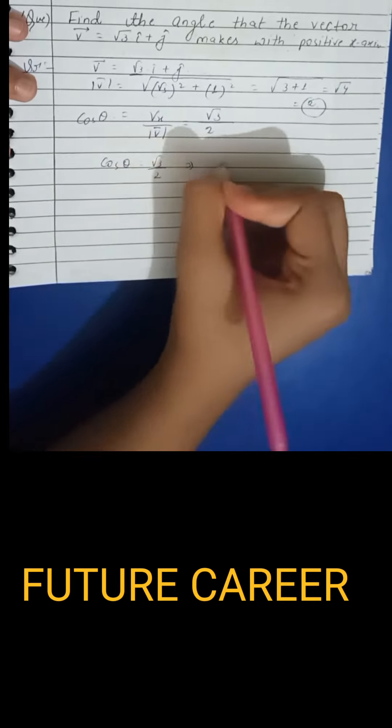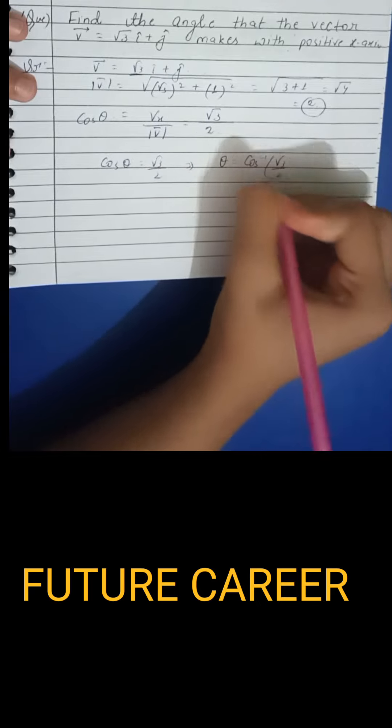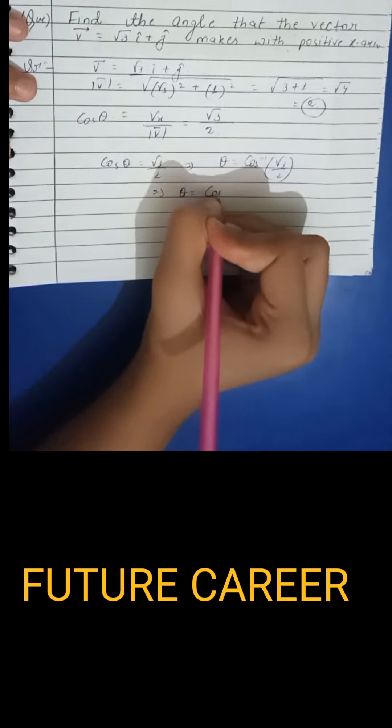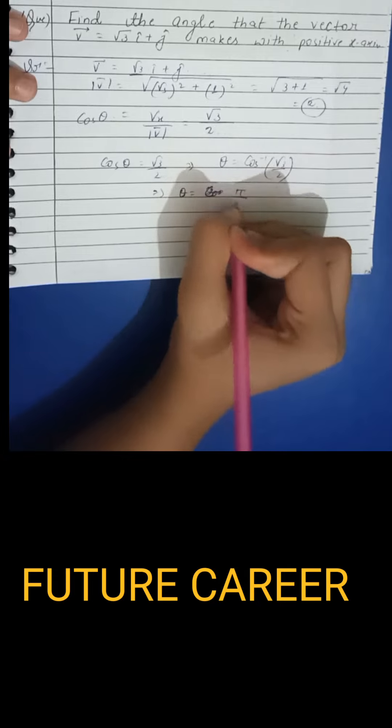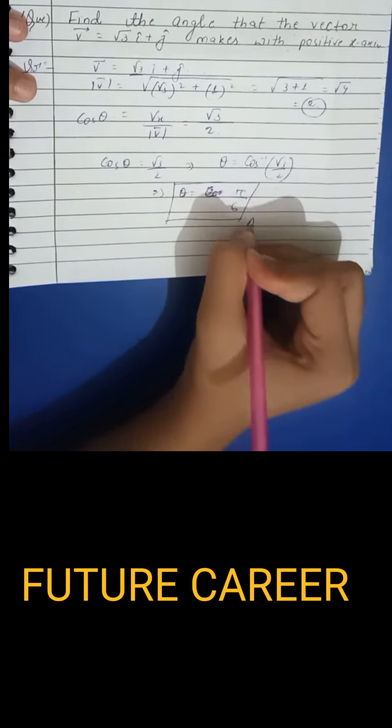Or θ = cos⁻¹(√3/2), so θ = cos⁻¹(√3/2) which is π/6. So θ = π/6 is the required answer.